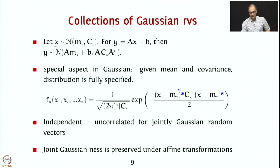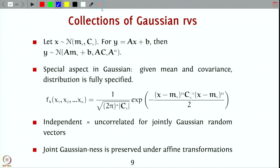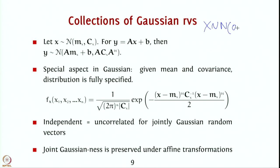There is a very classic example where a pair of random variables are both individually Gaussian but not jointly Gaussian. Let x be distributed as Normal with mean 0 and variance 1. Let alpha be independent of x and equal to +1 or −1 with equal probability — like a coin flip. Then define y = alpha * x.